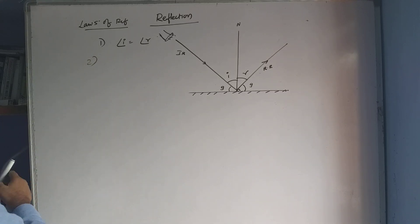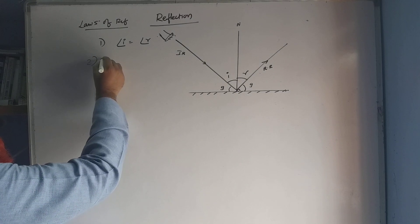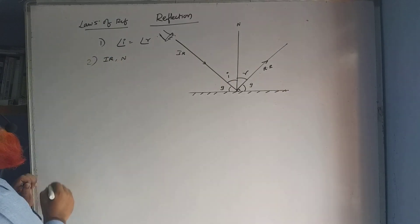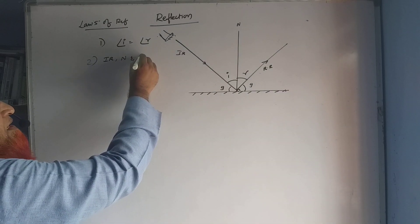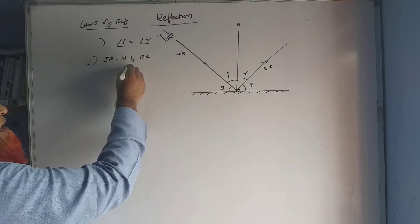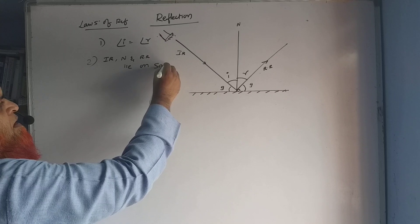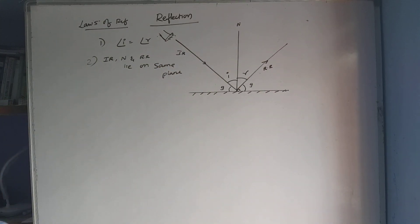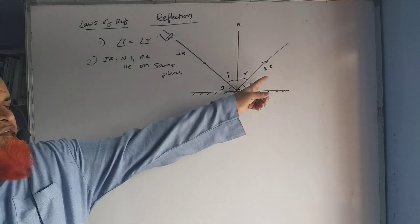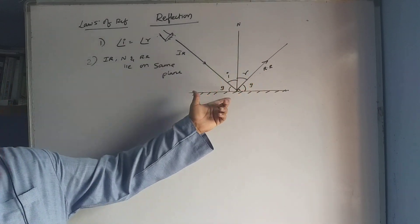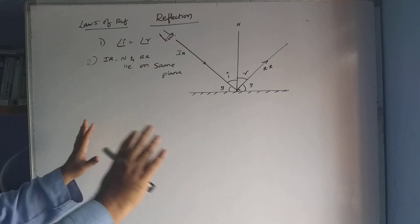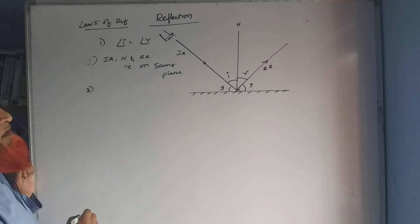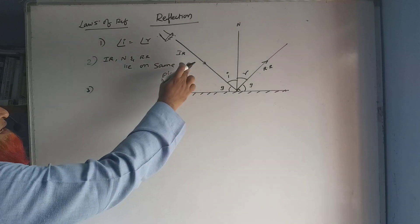The second law of reflection states that the incident ray, the normal, and the reflected ray all lie on the same plane.